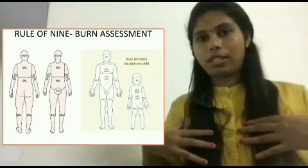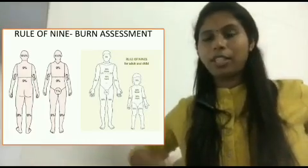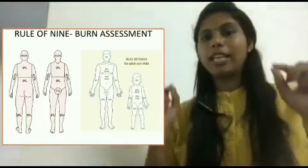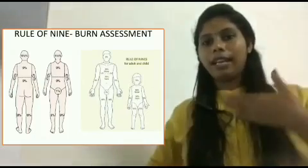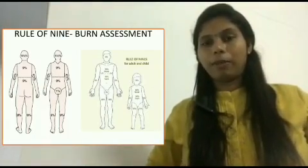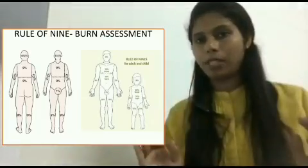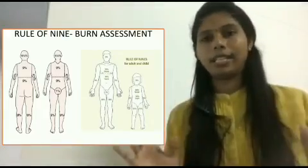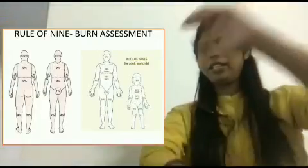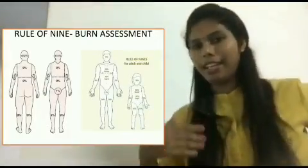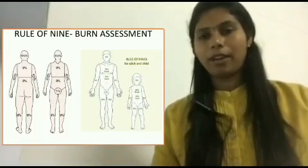The anterior part of the chest is 9 percent and the abdomen is 9 percent, so the total front of the body between the neck and the lower abdomen is 18 percent. The back area is also 18 percent. So the total for chest, abdomen, and back together is 36 percent. That finishes the upper half of the body.